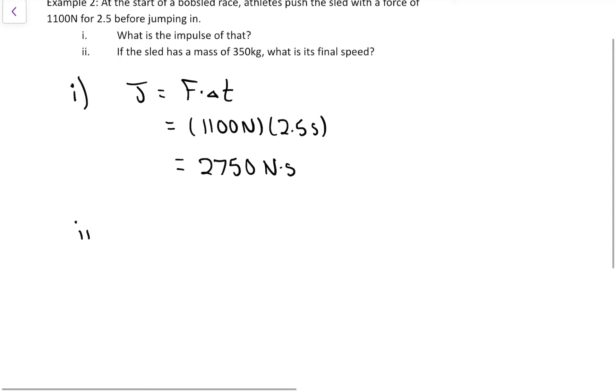If we know the mass, then we can do something with that. J is also change of momentum, and we know that it's the 2,750 number. Change of momentum is mv2 minus mv1. The mass isn't changing, so a common mass.